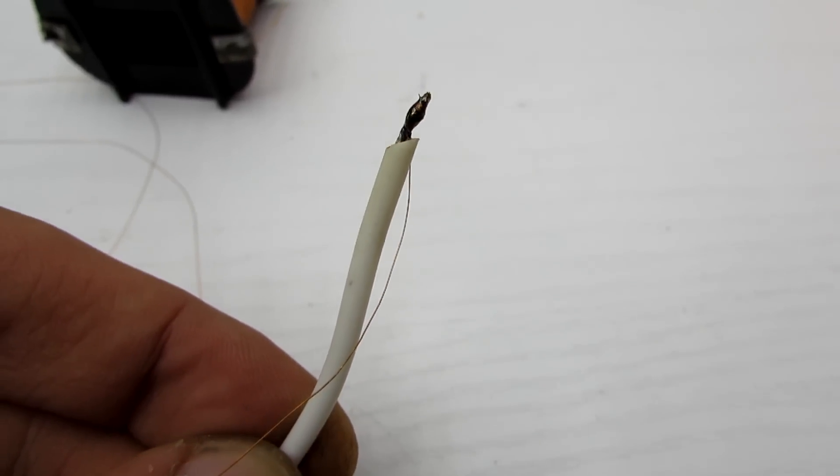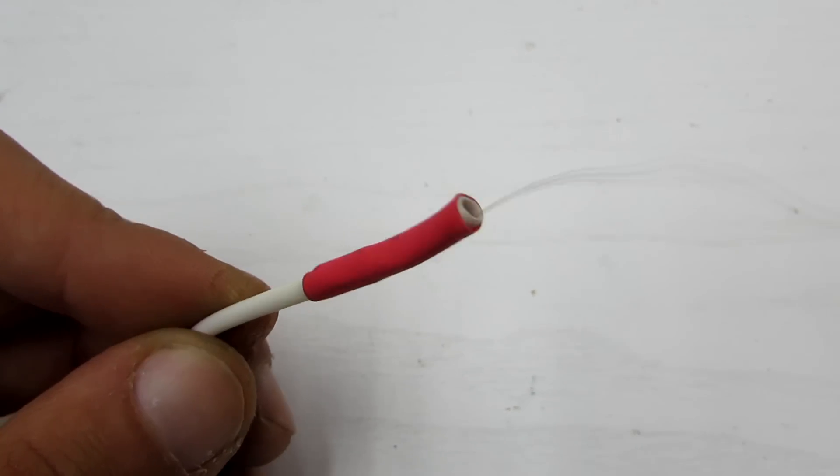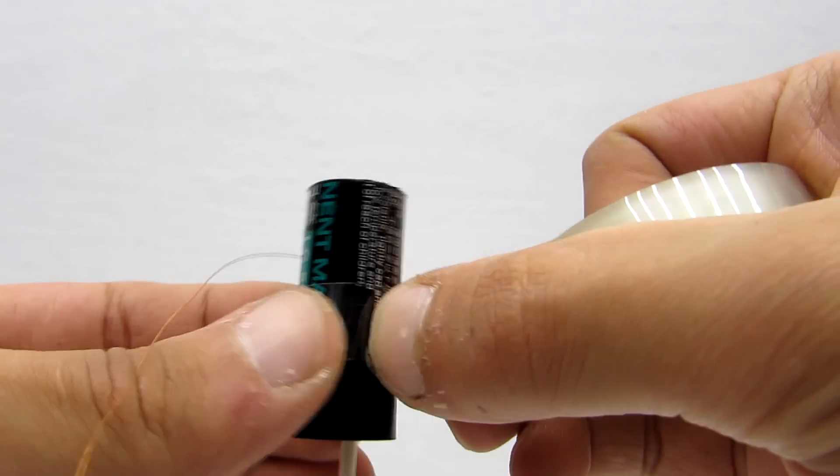At the beginning I soldered wires together and isolated with two layers of heat shrink tubes. I fixed the wire to the frame with tape.